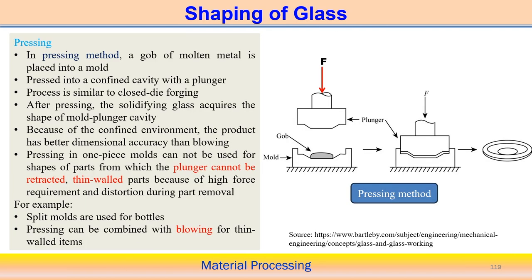Another way to produce glass shapes is called pressing. A GOB of molten glass is placed into the mold cavity, and a plunger is pressed over the GOB, causing it to fill and take the shape of the cavity. After solidification, the component is taken out. This is a very simple process — the glass is pressed into a confined cavity by the plunger, similar in principle to a closed die forging operation.